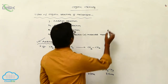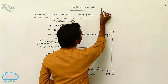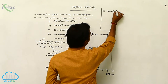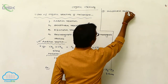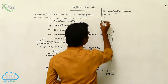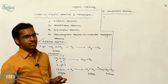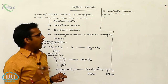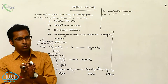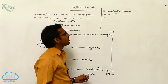The second type is substitution reaction. In substitution reaction, an atom or group is replaced by another atom or group in an organic reaction. It is called substitution reaction.